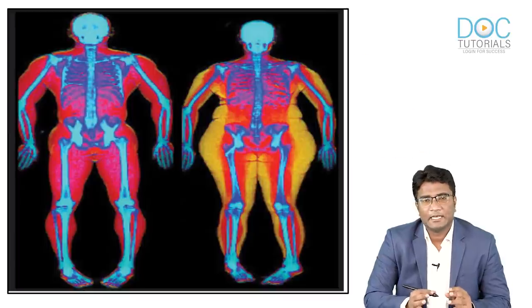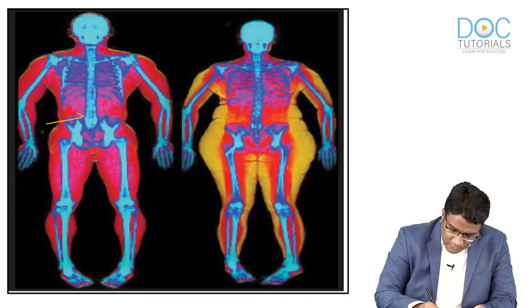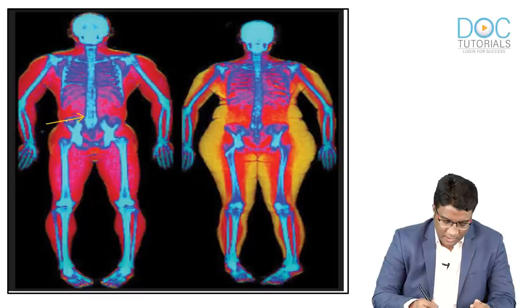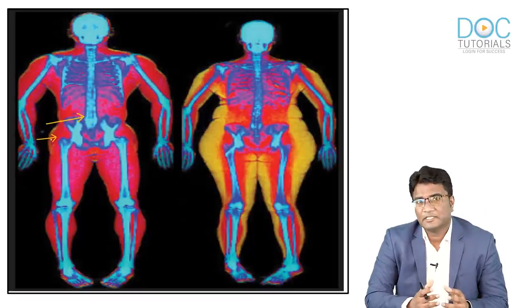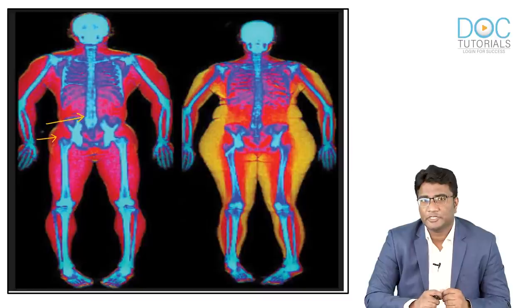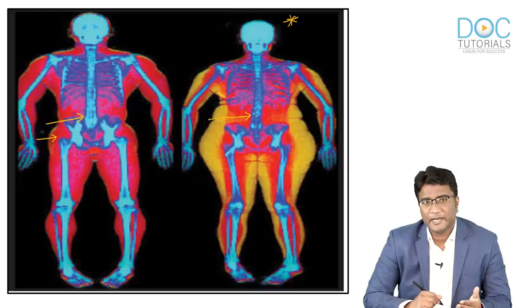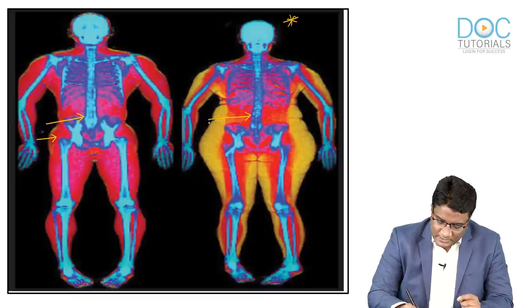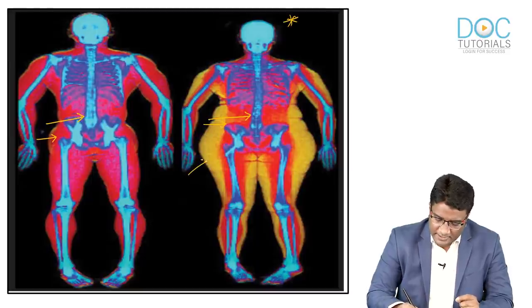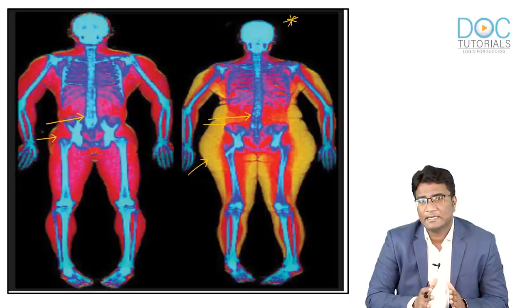Looking at DEXA scan images from two different patients, you can see that bone mineral density can be obtained from the lumbar spine. We can also evaluate the lean body mass and muscle mass of the patient. DEXA is not just for bone mineral density — it can also show lean body mass and fat content. In this second case, the patient has lesser muscle mass and more fat content.